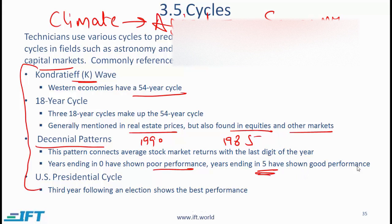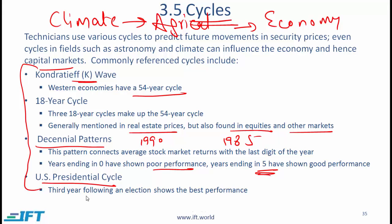Years ending in 5 have shown good performance. Finally, the US presidential cycle suggests that the third year following an election shows the best performance, because this is the time when the president is trying to boost the economy so as to have a better chance of being re-elected.